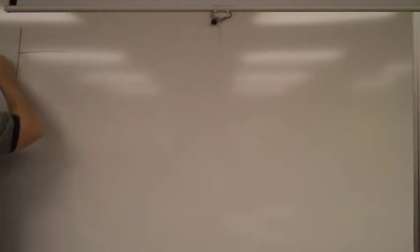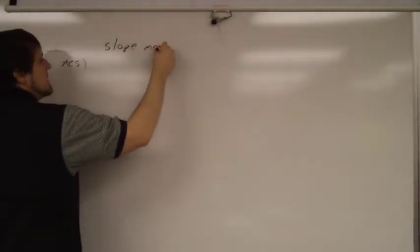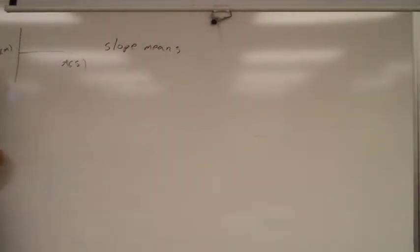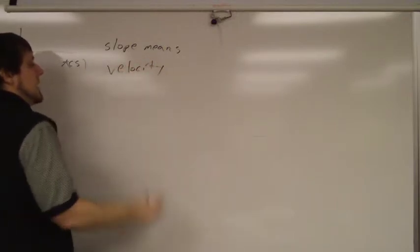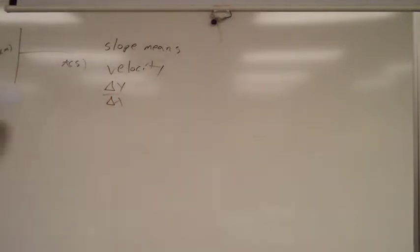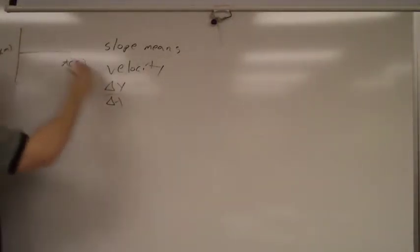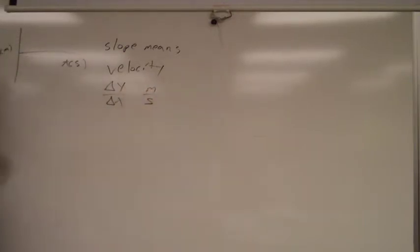So, on a position time graph, I'm not going to put anything on here yet. Can somebody tell me what does the slope mean? The slope means what? Velocity, or represents velocity. Why is that? Delta Y over delta X, now this should all be reviewed. Delta Y over delta X has units of what? The change in Y is meters. The change in X is seconds.